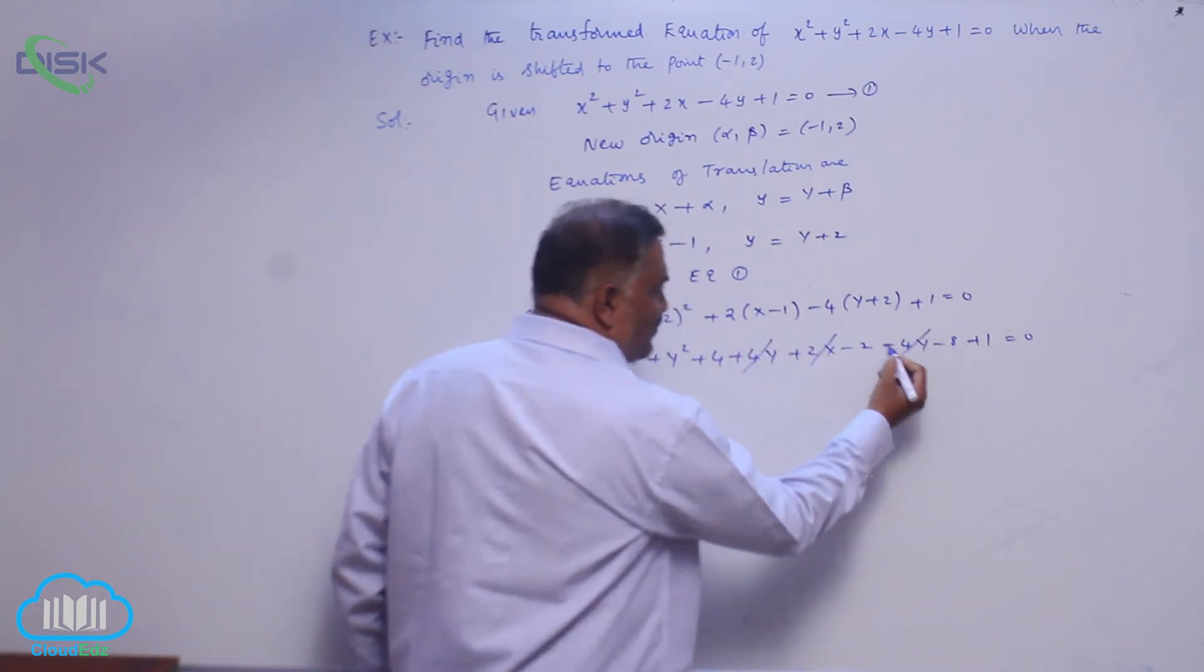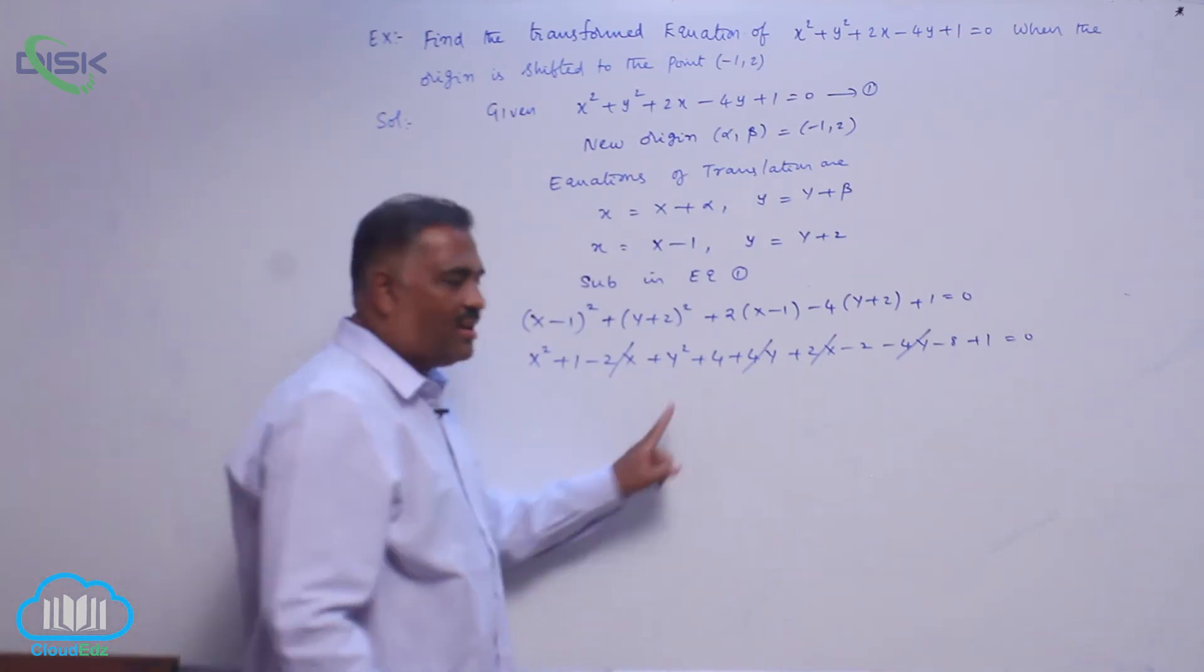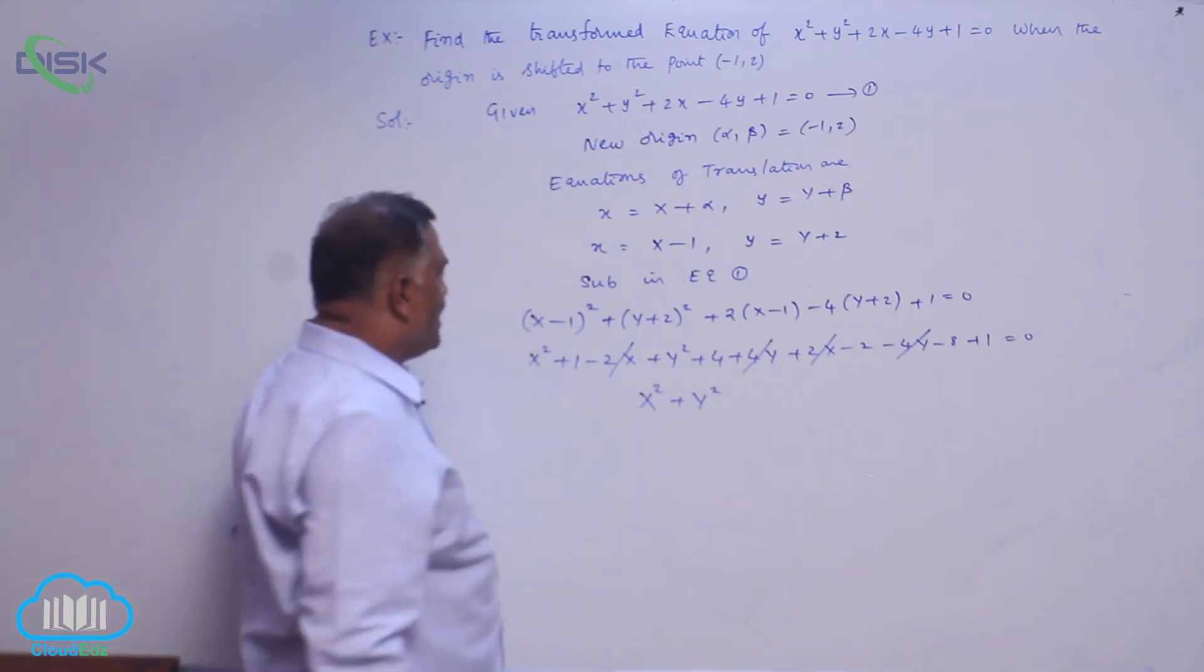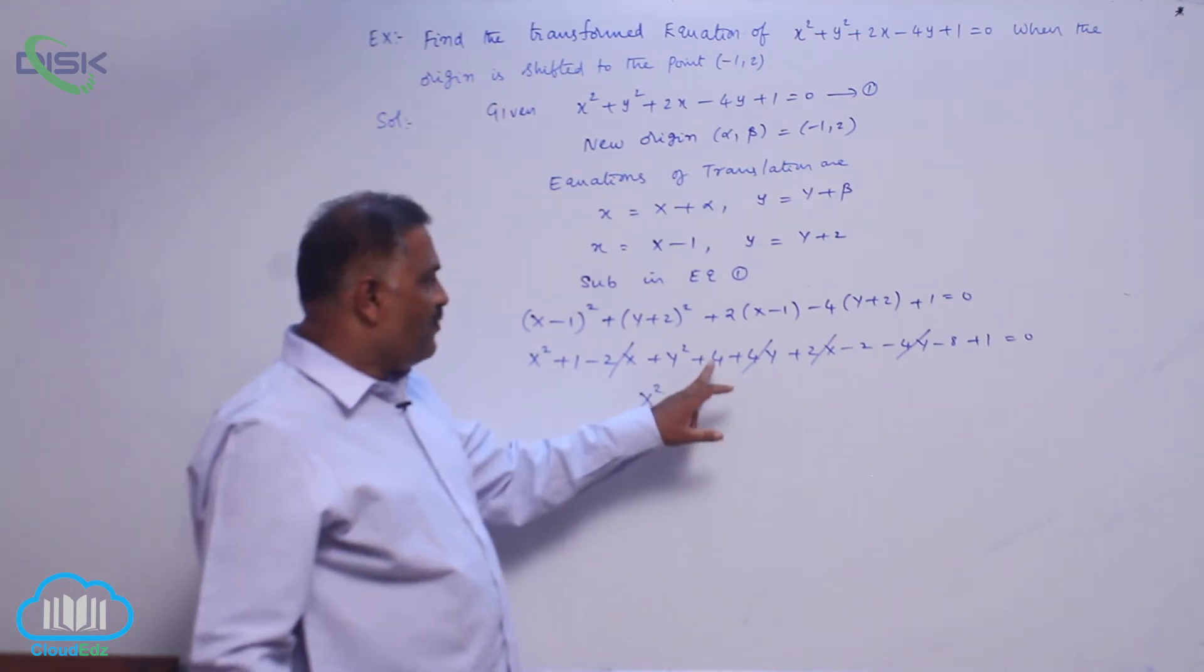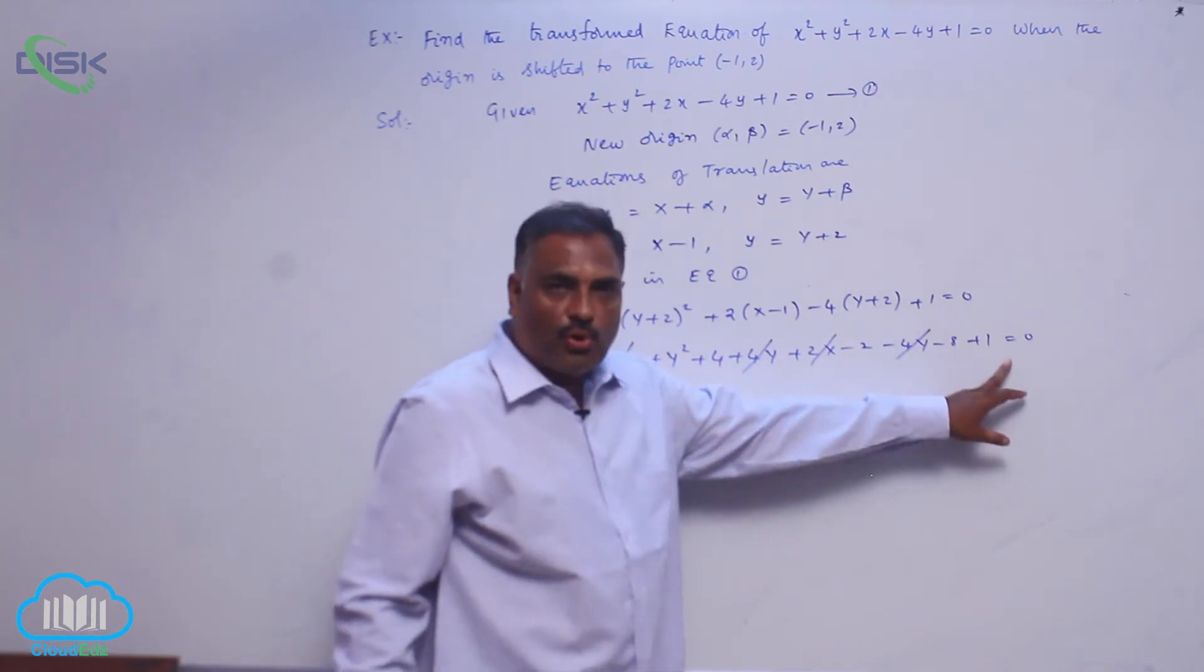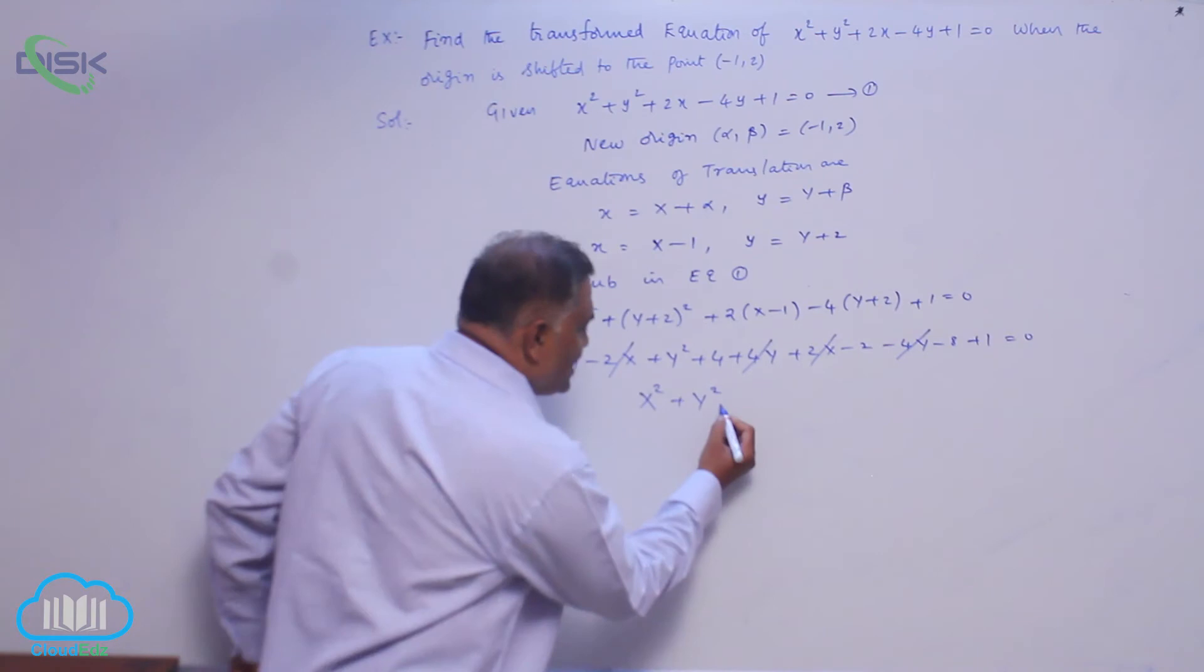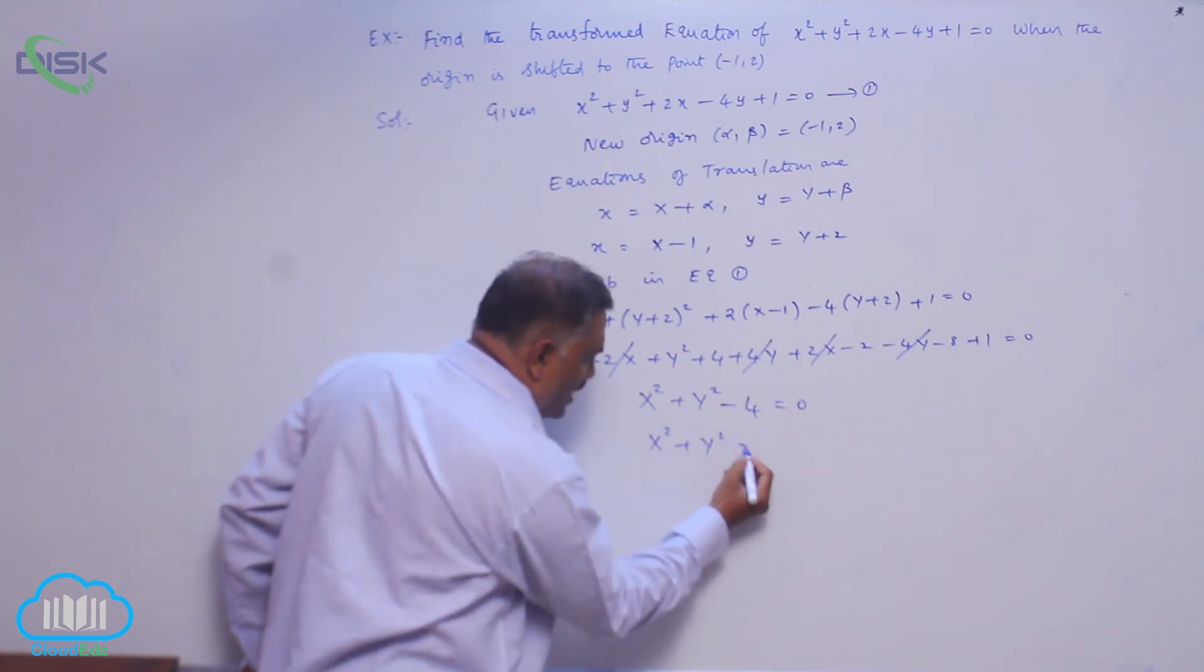Leaving X² here, Y² here. Write down X² + Y²: 1 + 4 = 5, 5 - 2 = 3, 3 + 1 = 4, 4 - 8 = -4, equals 0. So X² + Y² = 4.